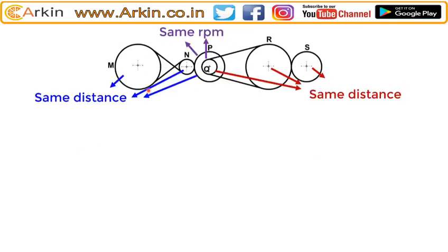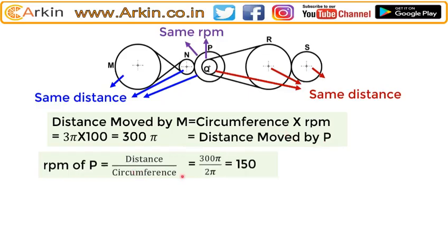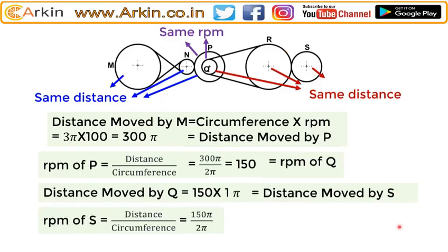The diameter of M is 3, so the distance will be 300 pi — that is the same distance traveled by P. The RPM of P will be 300 pi divided by 2 pi = 150, which is also the RPM of Q since they are on the same shaft. The distance moved by Q will be 150 pi, which is the same distance moved by S. So the RPM of S will be 150 pi divided by 2 pi = 75.